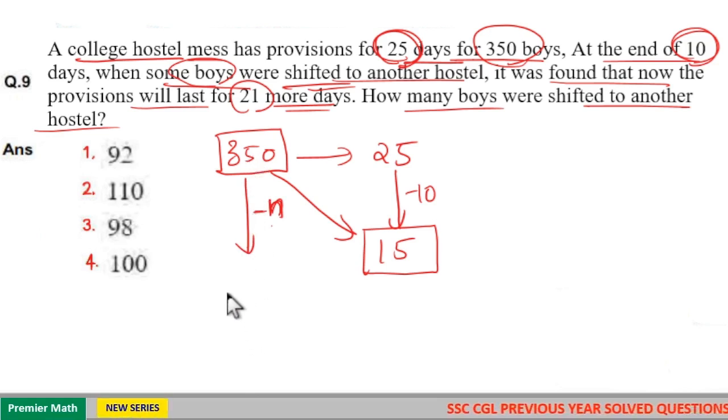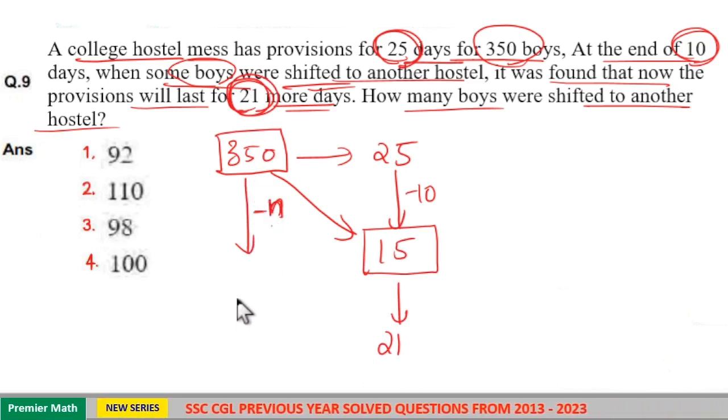Now, after leaving this n number of boys, this food will last for 21 more days. That is, 15 increases to 21. That is for 350 minus n boys.